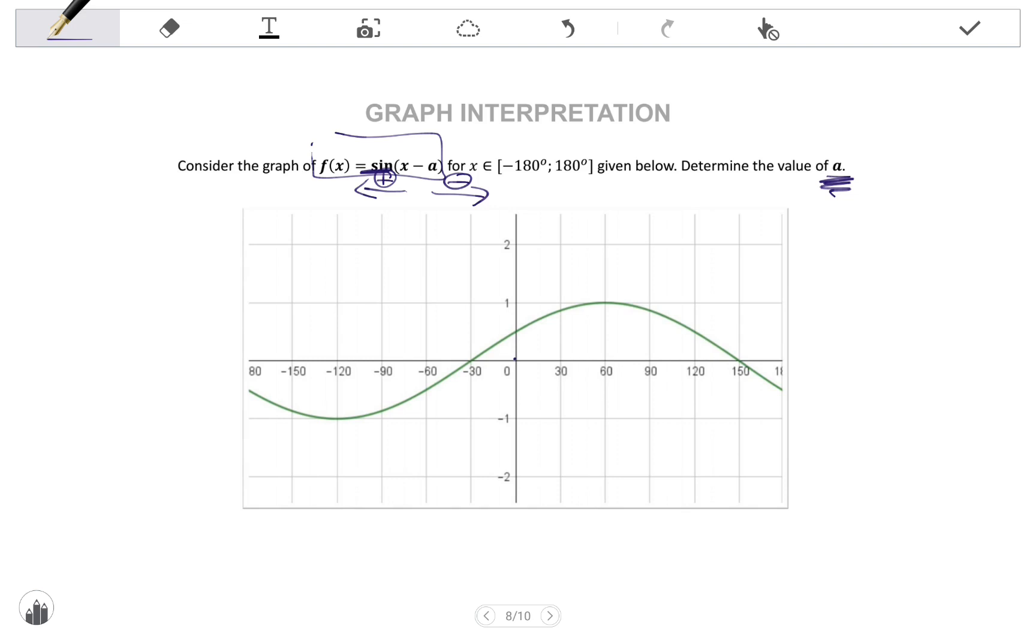The basic sine graph sits at 0, 0, goes to 90 and 1, then 180 degrees 0 and negative 90, negative 1, and then goes up. It shouldn't be so sharp cornered, but you get the idea.